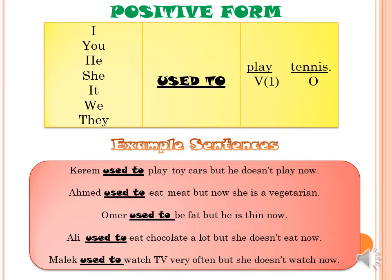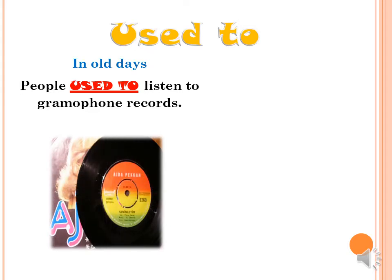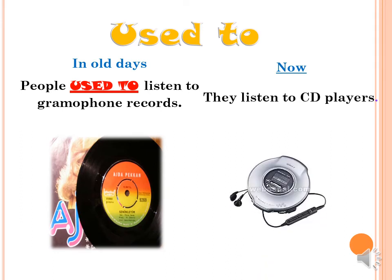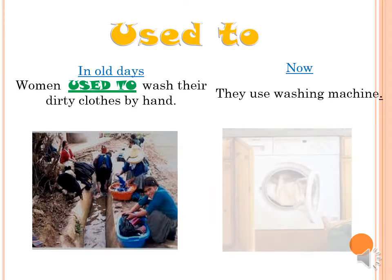Look at the other examples. People used to listen to gramophone records — that means in the past, in old days, they used to listen to gramophone records, but now they listen to CD players. That means now, in the present, they don't listen to gramophone records. Also, women used to wash their dirty clothes by hand. What about now? They use a washing machine.